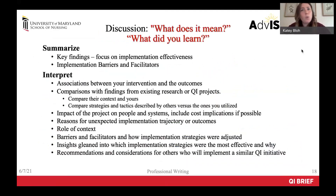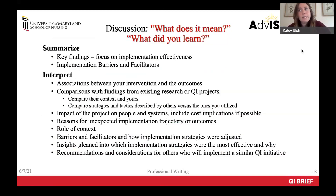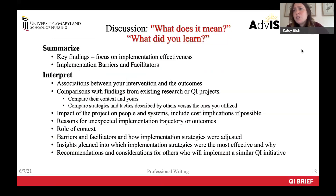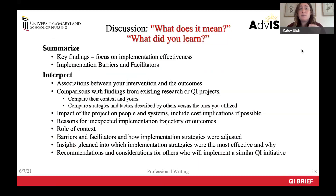The discussion section should answer the question: what does this mean? What did you learn? You want to summarize and interpret results and then discuss the limitations of your project. In a research paper, the discussion would focus on limitations that were largely technical and statistical, such as issues of blinding, randomization, and sample size, and would focus on what future research should look like. In quality improvement, the discussion section is about providing meaning for the results you found — what did you learn, and how did what you learned compare to others who attempted to implement a similar project? Which strategies and tactics were the most useful? You want to make connections between your strategies and your results, discuss what barriers got in your way, and what things helped facilitate success. The discussion needs to be very context specific.